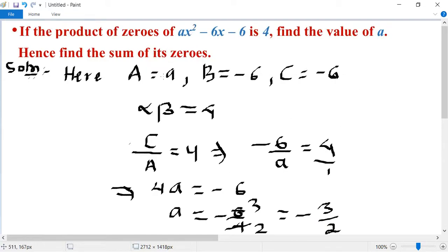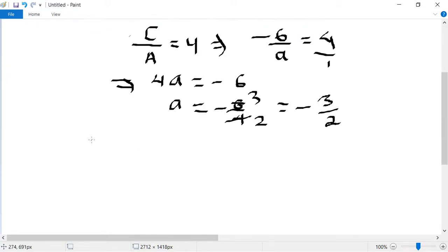We have to find sum of its zeros. Sum of its zeros means alpha plus beta, alpha plus beta equal to minus b upon a.